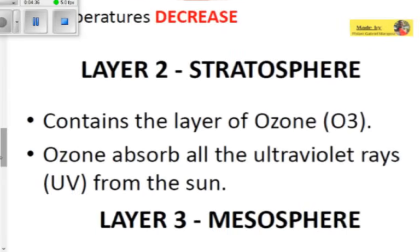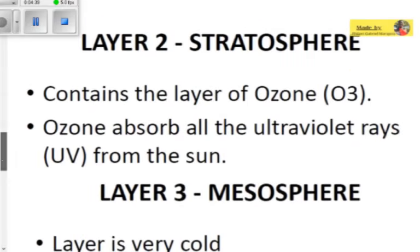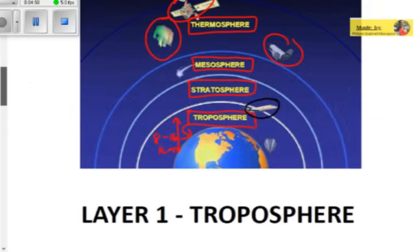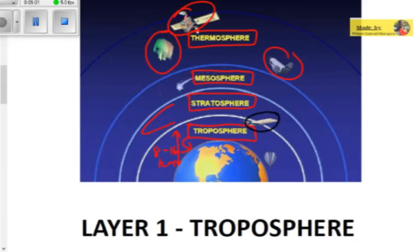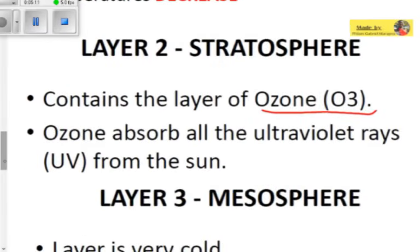Layer two is the stratosphere. The stratosphere contains a layer of ozone, which is composed of three oxygen atoms — written as O₃. Ozone absorbs all the ultraviolet (UV) rays from the sun. We'll make a dedicated video on ozone and its functions in more detail.